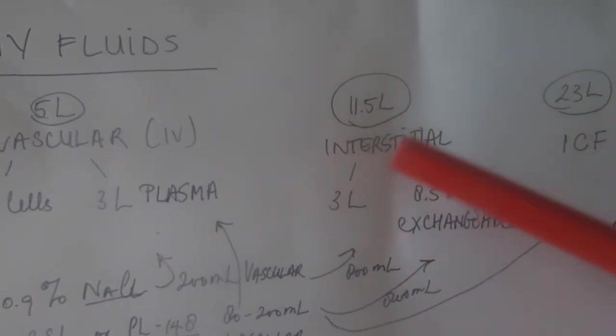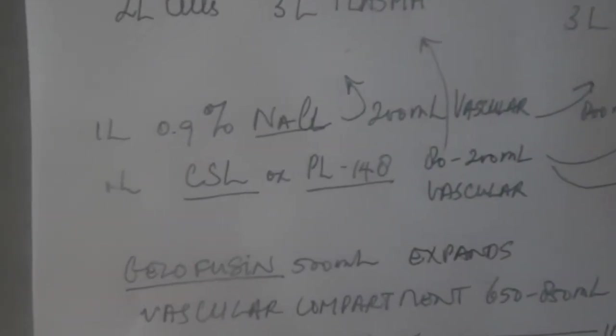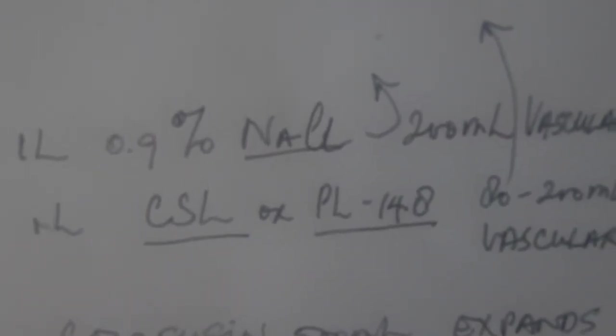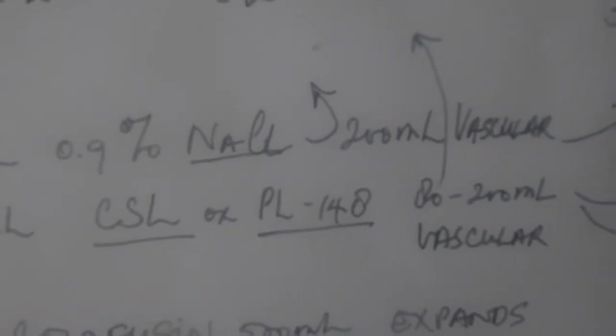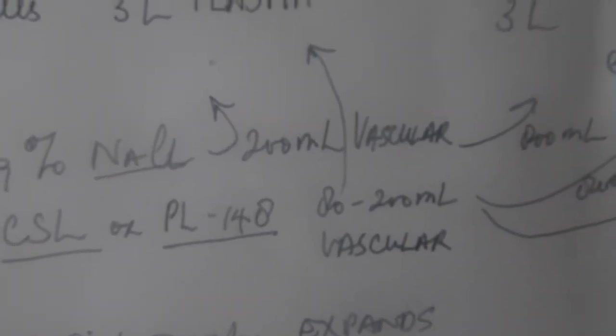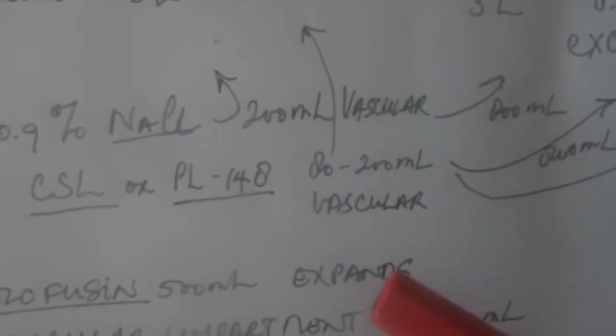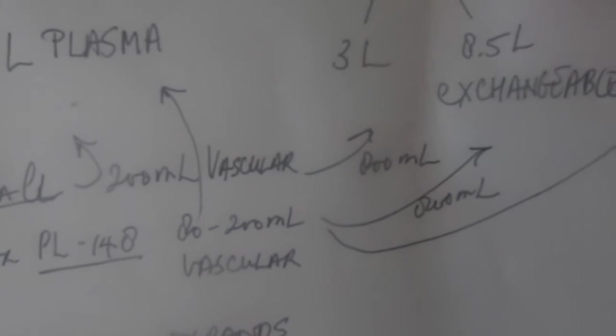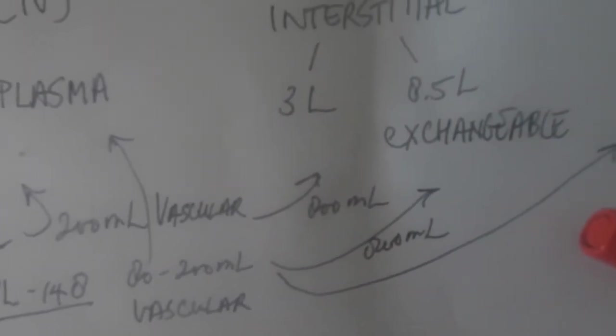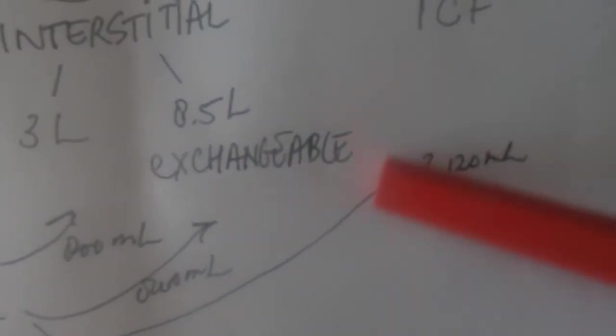The other 800 mils will go into the tissues. With Hartmann's or compound sodium lactate and Plasma-Lyte, it's a bit different. It's between 80 to 200 going intervascularly, most of it going into interstitial.